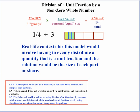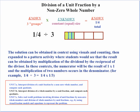Some real-life context for this particular model would involve having to evenly distribute some quantity that's a unit fraction, and the solution would be the size of each part or share. Solutions can be obtained in context using visuals and counting, then expand that to a pattern activity where students see that the result can be gotten by multiplying the dividend by the reciprocal of the divisor. In these contexts, the numerator is the result of one times one, and the multiplication of the two numbers occurs in the denominator. For example, one-fourth divided by three ends up as one-fourth times one-third.